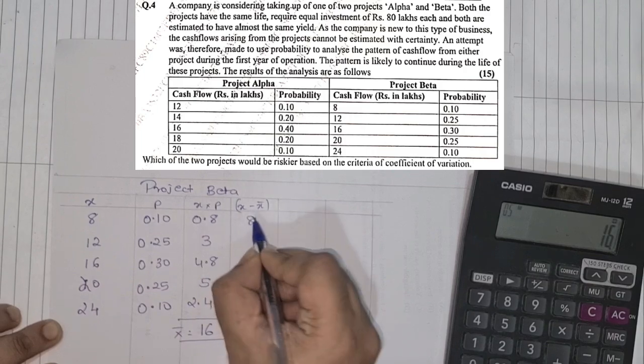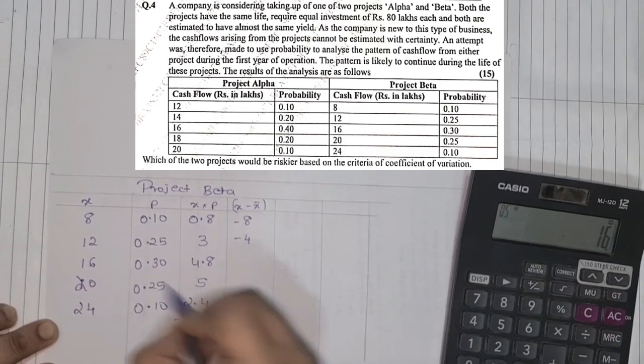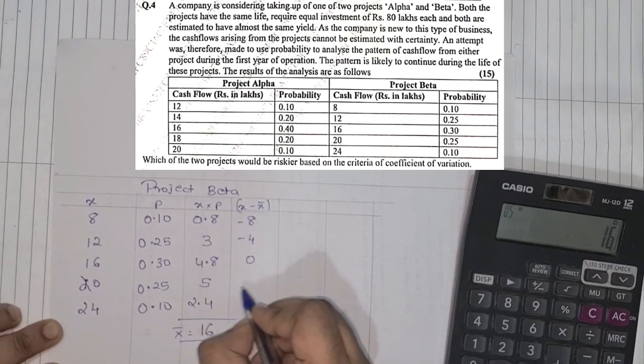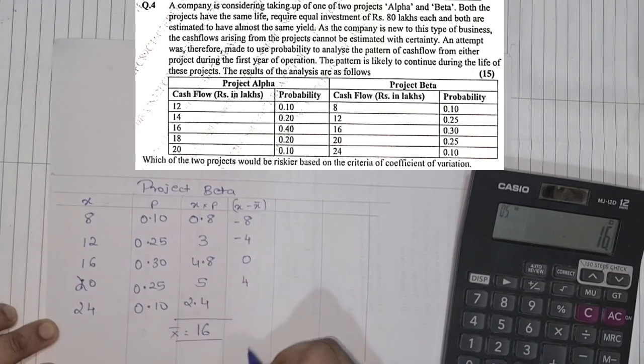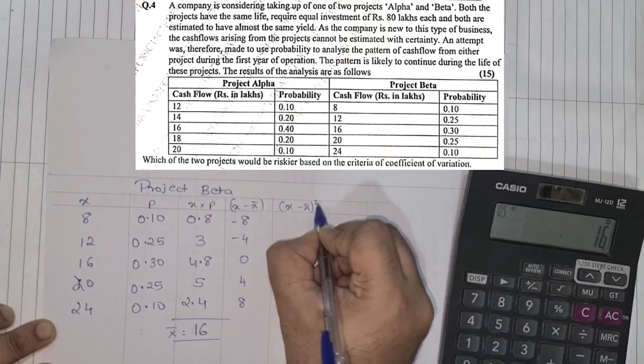Next is X minus X bar. 8 minus 16 is negative 8, 12 minus 16 is negative 4, 16 minus 16 is 0, 20 minus 16 is positive 4, 24 minus 16 is 8.